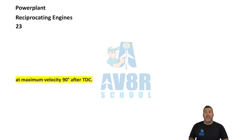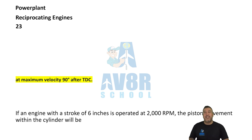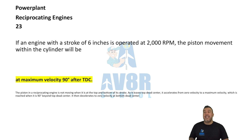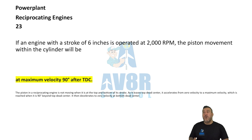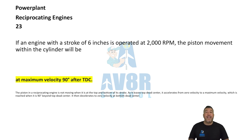Number 23. If an engine with a stroke of 6 inches is operated at 2000 RPM, the piston movement within the cylinder would be at maximum velocity 90 degrees after top dead center.